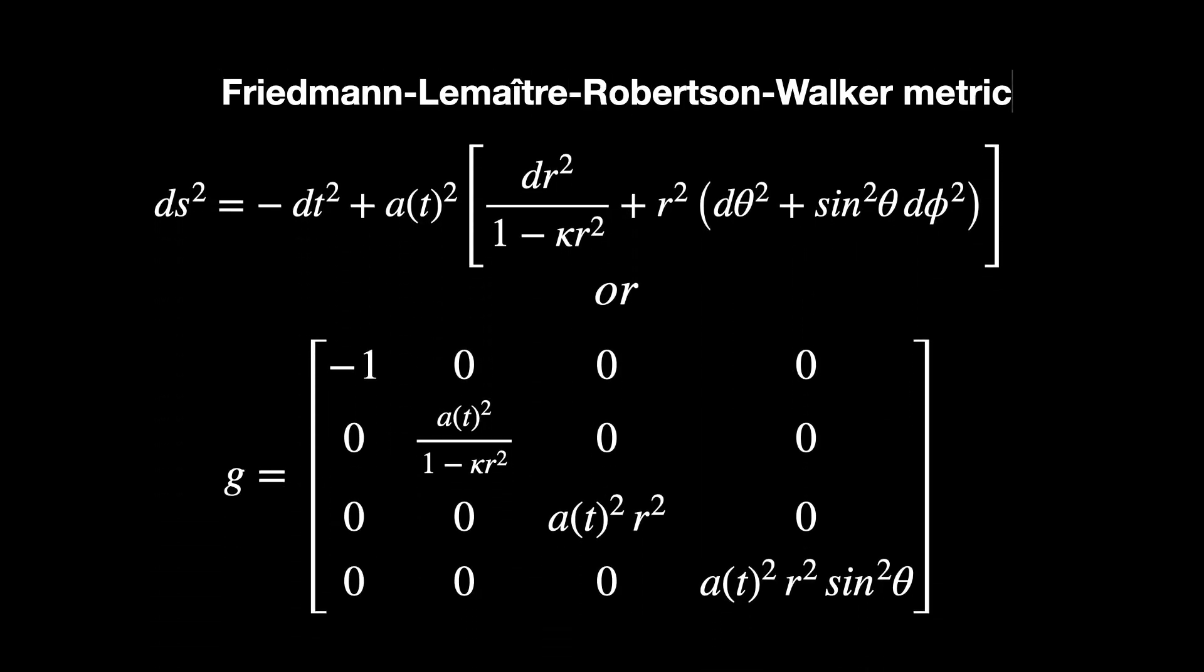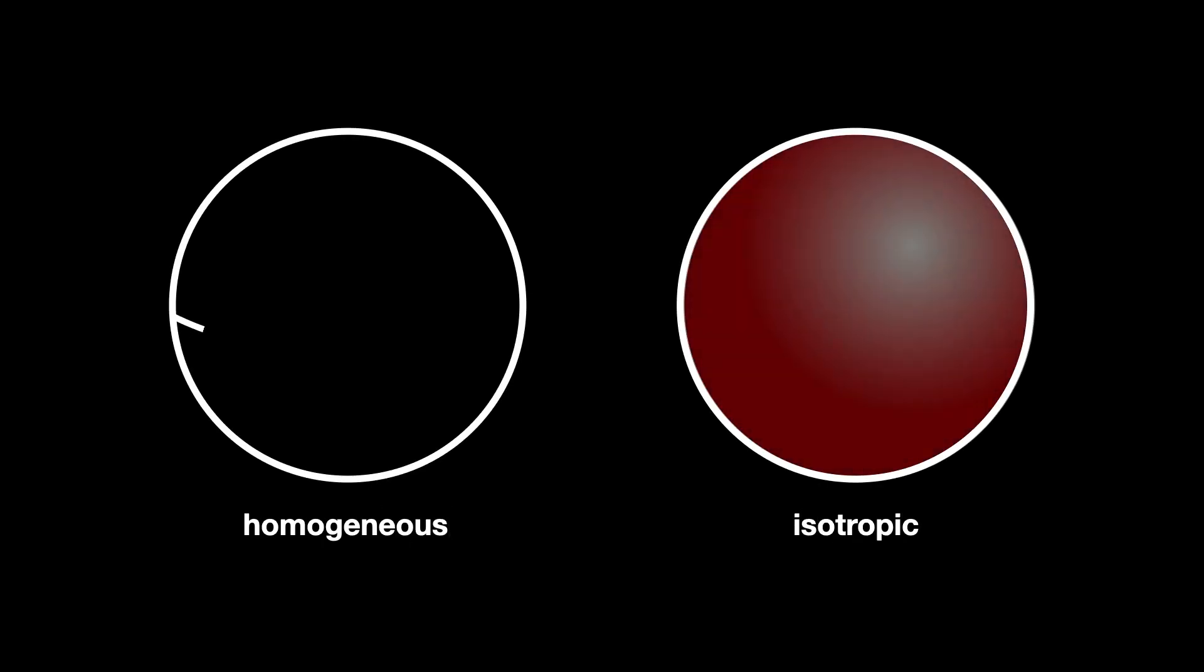Another alternative metric that satisfies Einstein field equations and that is diagonal is the Friedman-Lemaître-Robertson-Walker metric for cosmology, which assumes a homogeneous and isotropic universe.